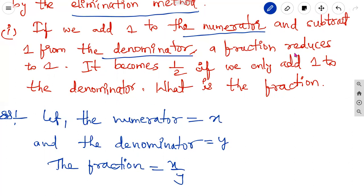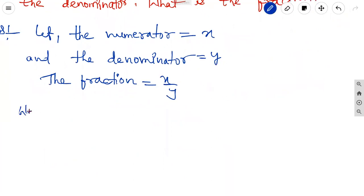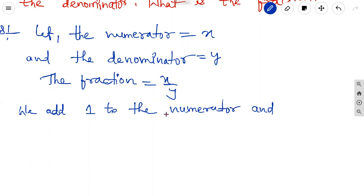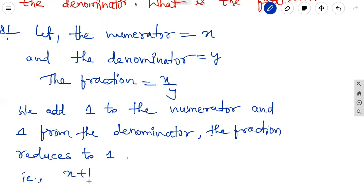Now we add 1 to the numerator and subtract 1 from the denominator — the fraction reduces to 1. That is, x plus 1 over y minus 1 equals 1, which gives x plus 1 minus of y minus 1 equal to 0.